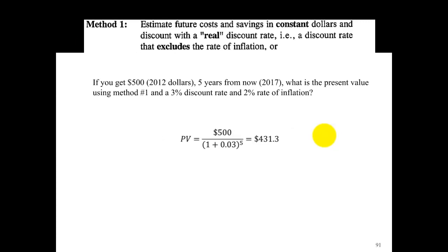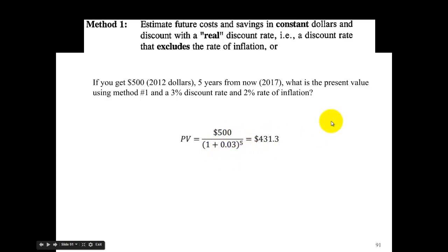Let's do method one first. If you receive five hundred dollars in 2012 dollars five years from now, what's the present value? Assume a three percent real discount rate and two percent inflation. The five hundred dollars is five hundred dollars of today's money received in 2017 — that's constant dollars. So using method one, we discount with the real discount rate: present value equals five hundred dollars discounted at three percent over five years, giving four hundred thirty-one dollars and thirty cents.